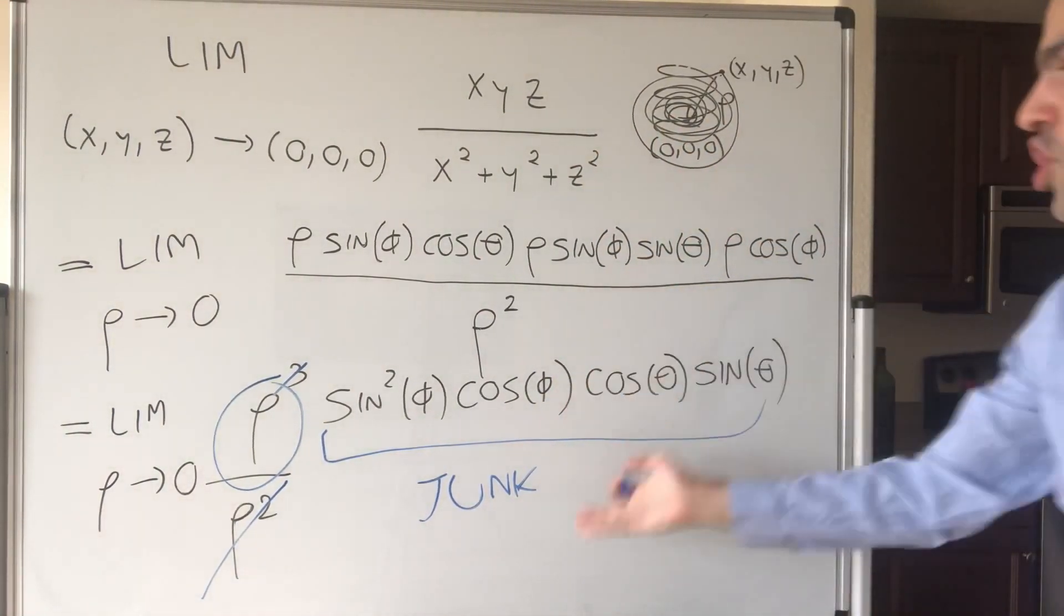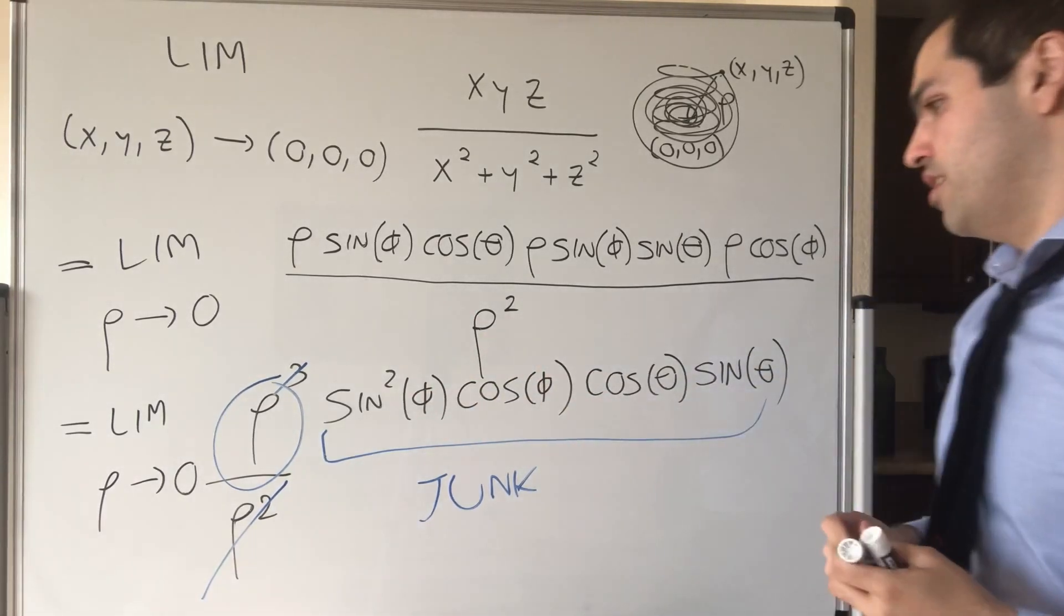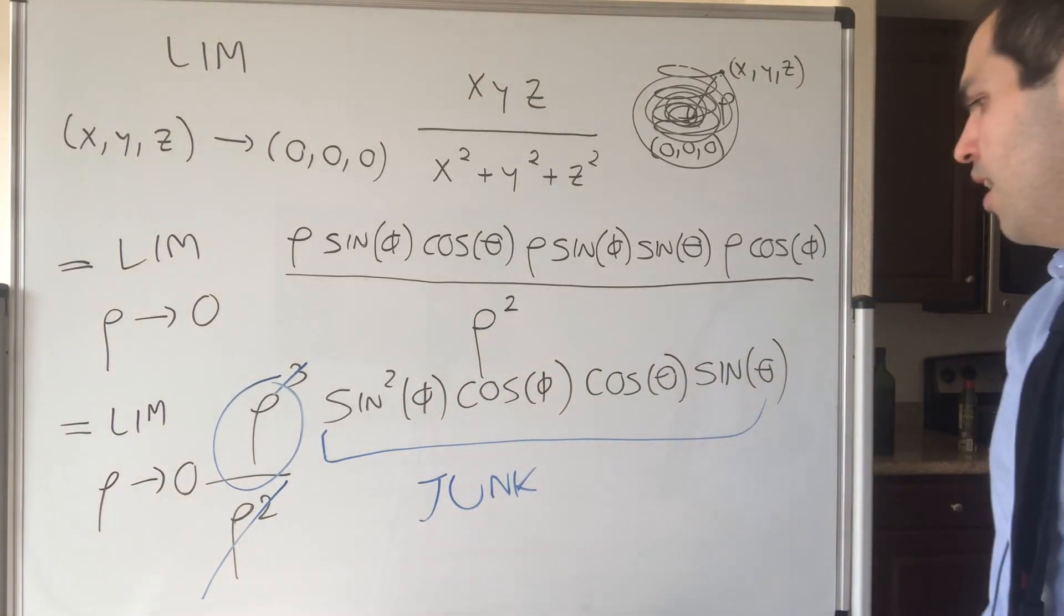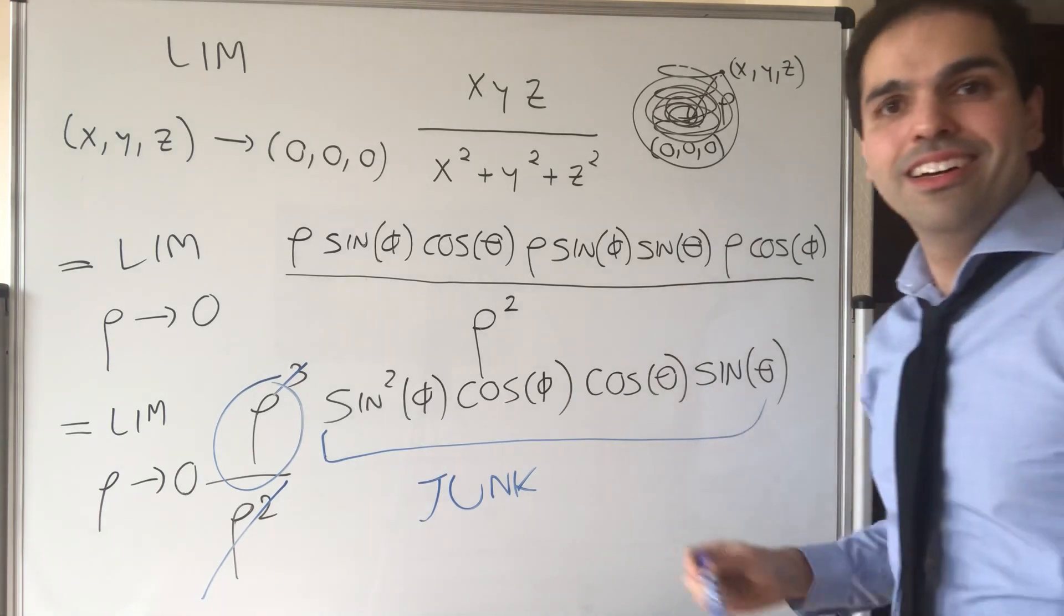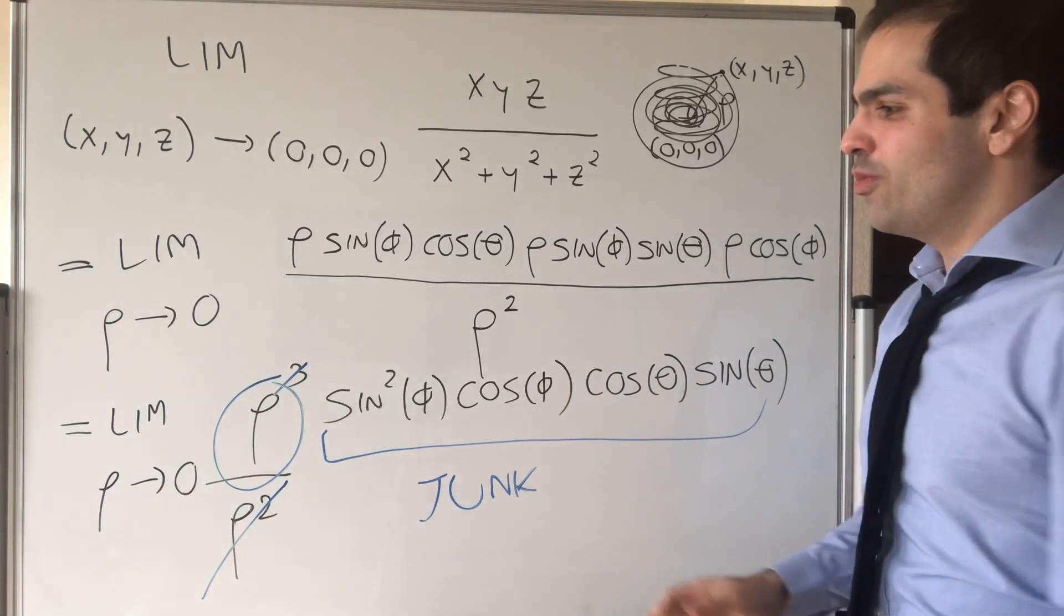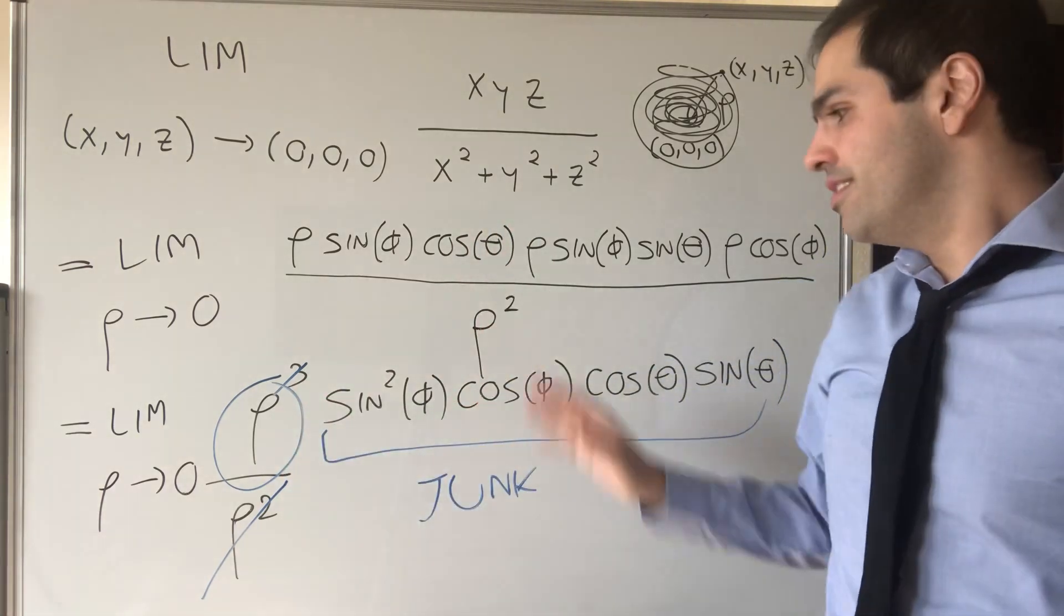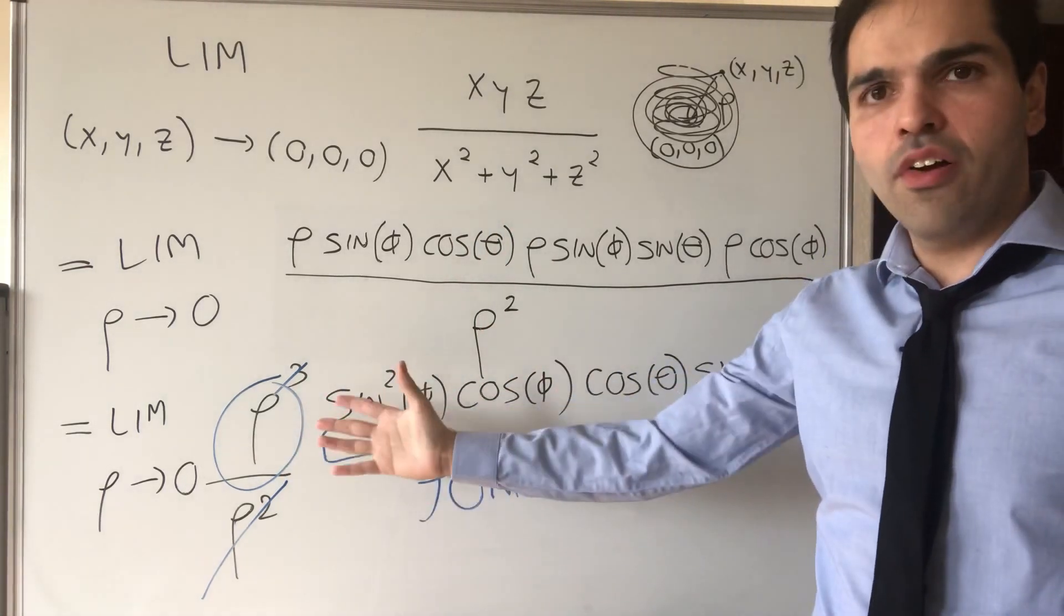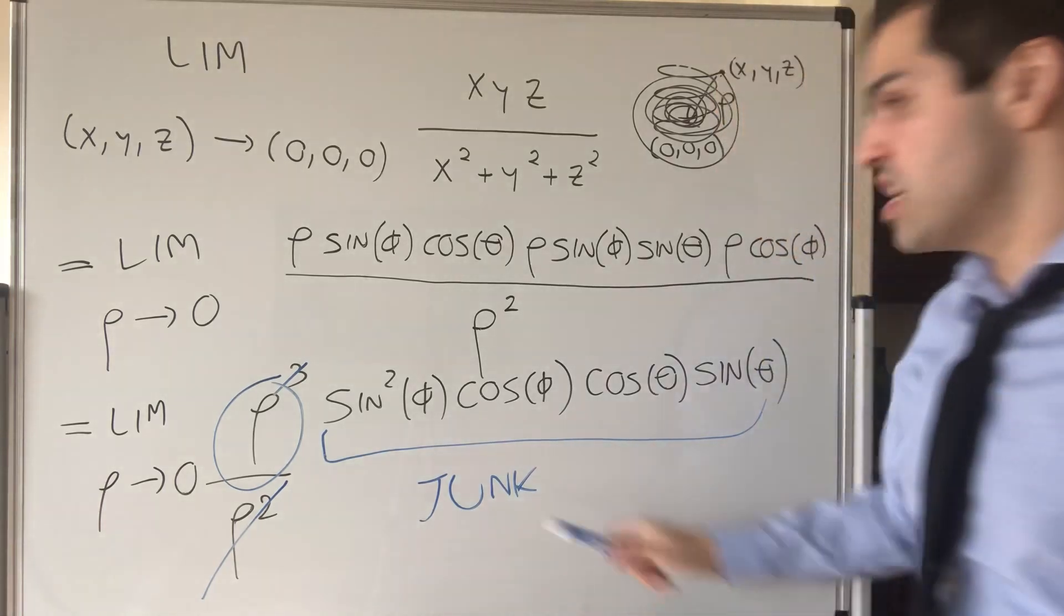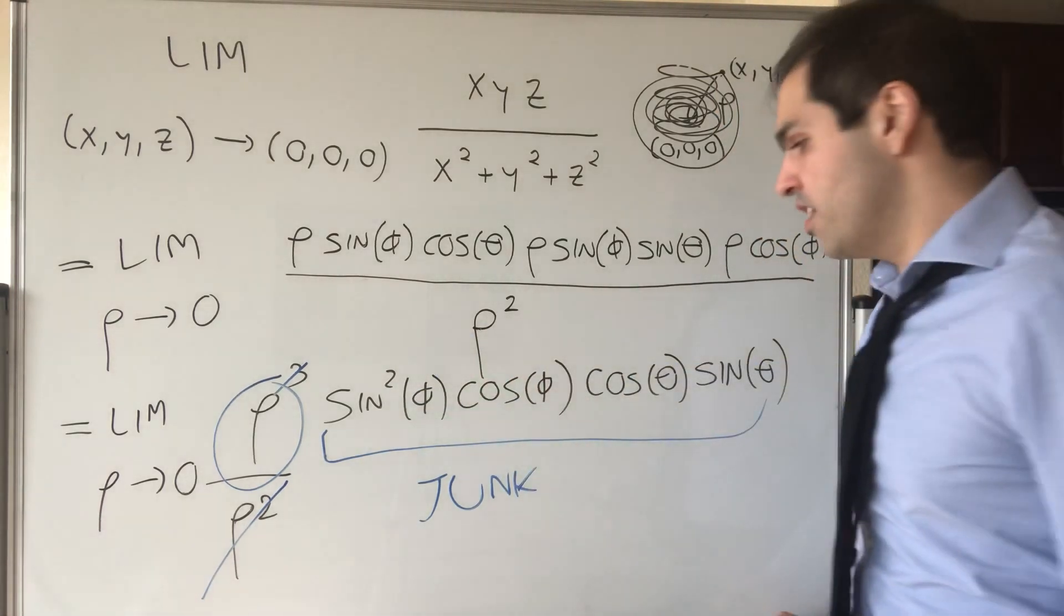But this junk is actually bounded junk. So it should be something between minus one and one. So in fact, what we get, this is between minus rho and rho. So in particular, we can just use the squeeze theorem and conclude that this whole thing is zero.